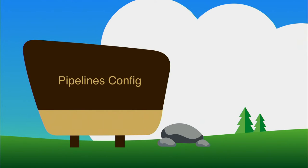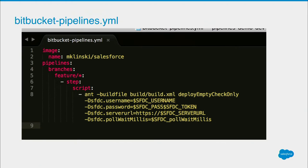Within Pipelines, all of the configuration is done within a settings file in YAML format. This is the basic YAML file that we're going to be building on over the course of this talk. You can see I'm pointing to my Docker Hub image — mklinski/salesforce. Below that on lines three through eight, this is where we set up our specific pipelines for the branches we're going to be using. Our first pipeline is for our feature branches, feature slash wildcard, and we'll talk a little bit more about what the script is doing in a minute.